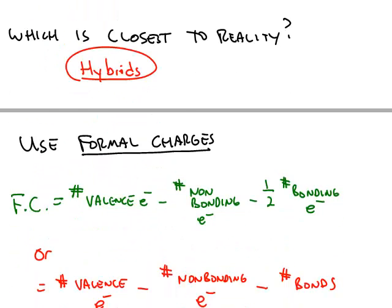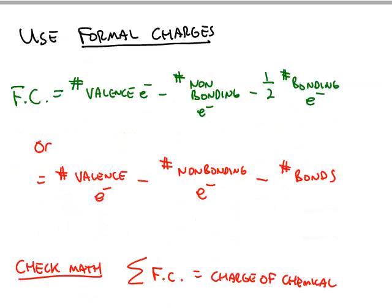In order to determine which one is closest to reality, which one is the best Lewis structure, we use formal charges, which is given by this formula: number of valence electrons from the periodic table for that atom minus the number of non-bonding electrons.